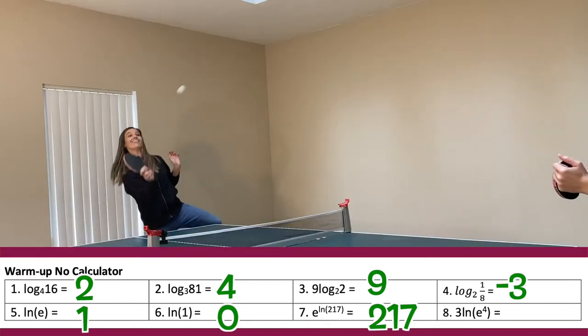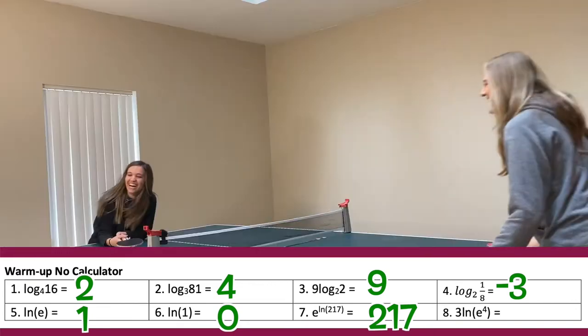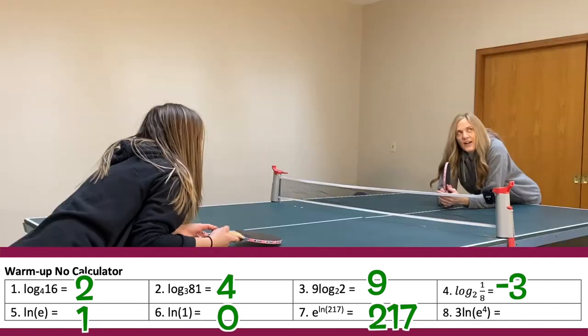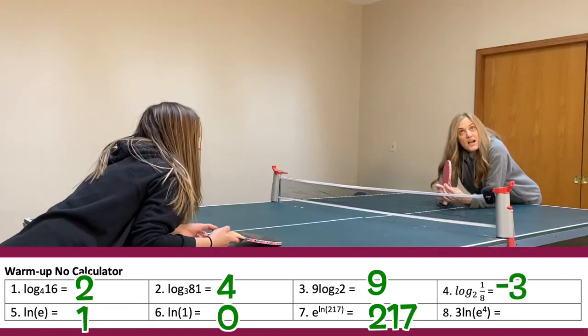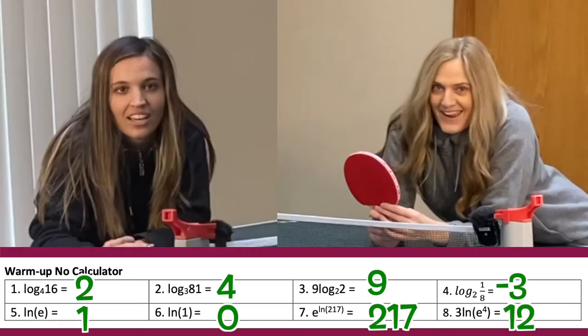3ln(e) to the 4th. Good thing we paused. So that would be 3 times 4, so 12. Yikes.